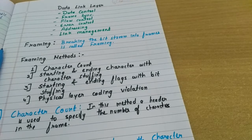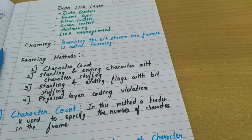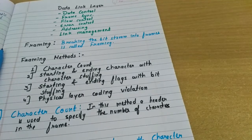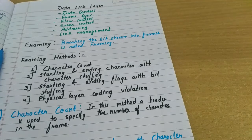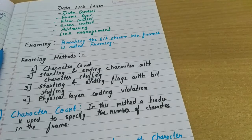In this video we will discuss the data link layer. The main functions of data link layer are data control, frame synchronization, flow control, error control, addressing, and link management. We have already seen these in the OSI model.